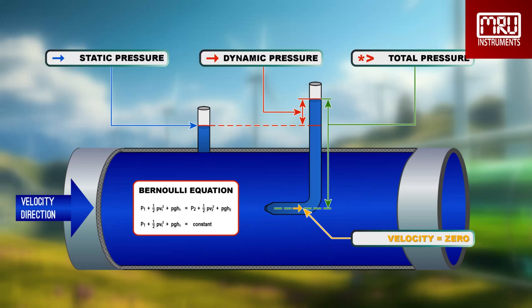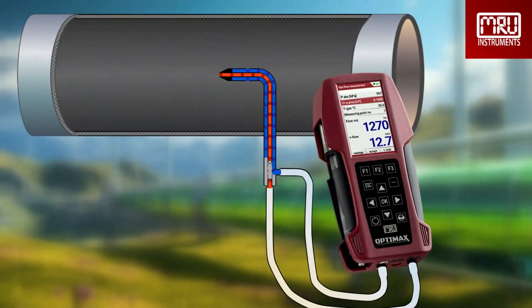But no worries — you don't need to start calculating. Our manometers and analyzers will do the math for you. As mentioned earlier, our pitot tubes are mostly used to measure gas or airflow, and the principle is the same as described before.